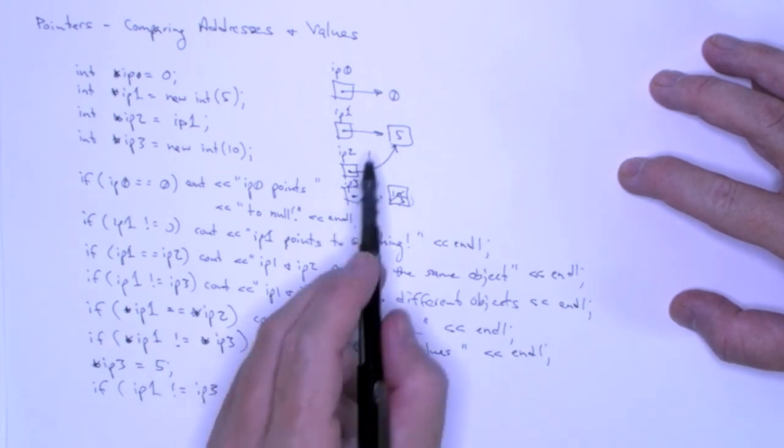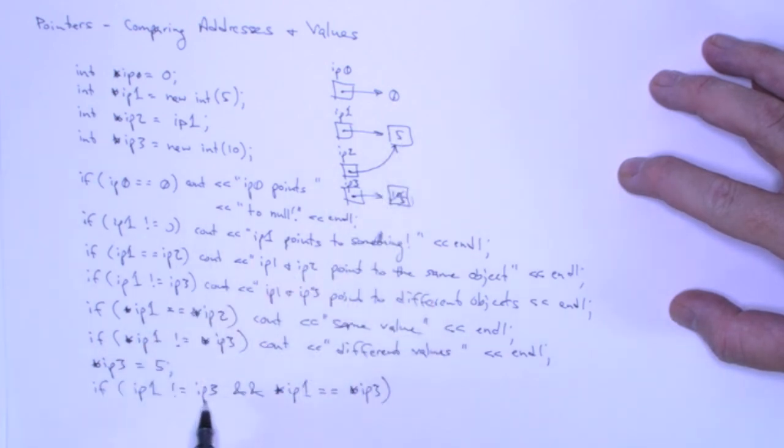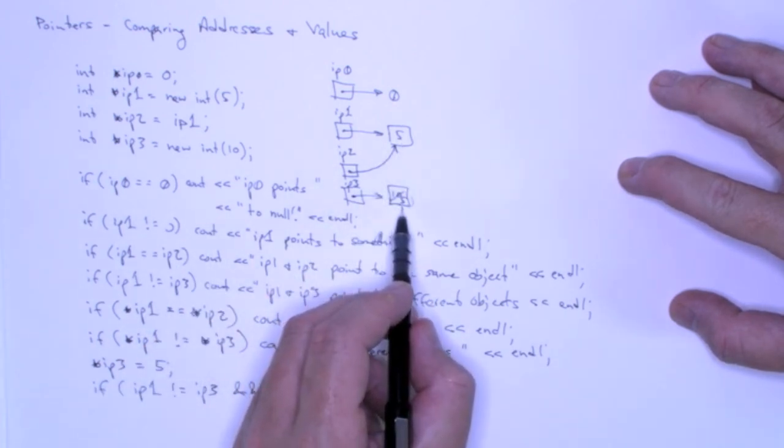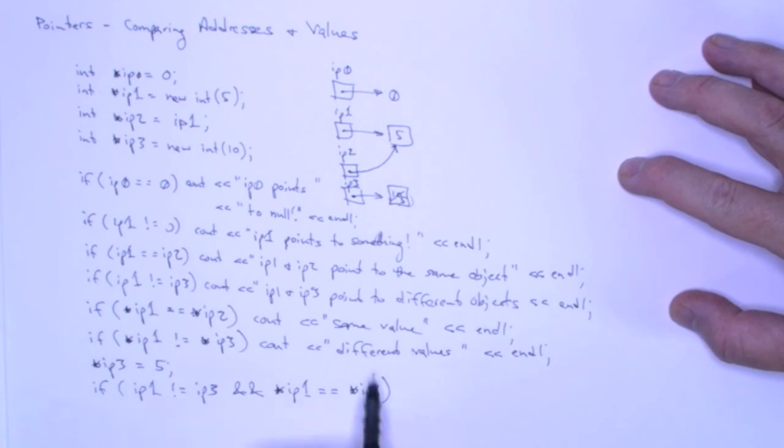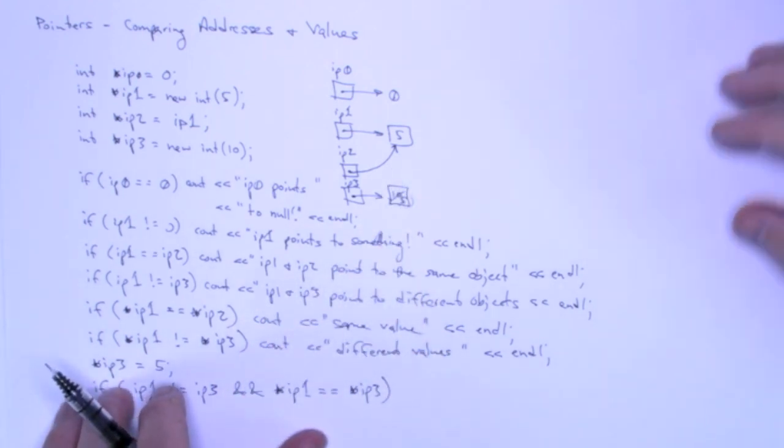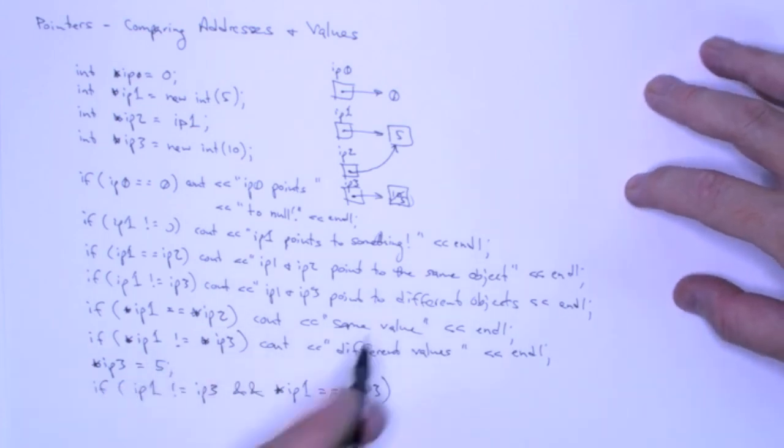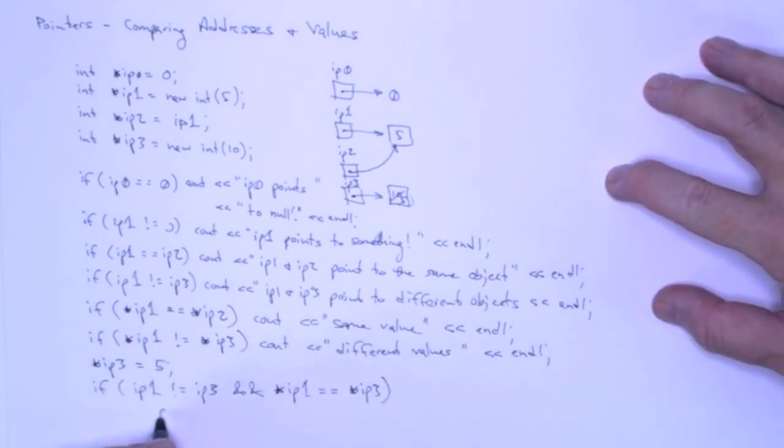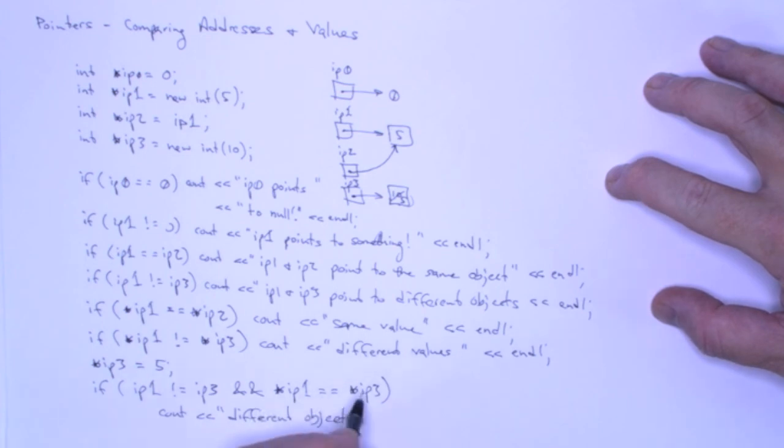So IP1 holds the address of this 5. IP3 holds the address of this 5. When I dereference them, I get 5 and this equality will be true. So I can conclude that they are different objects, but they're the same values.